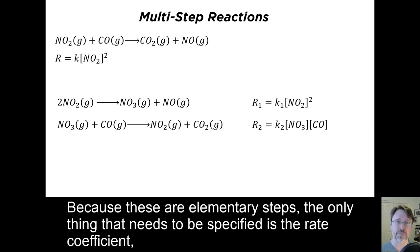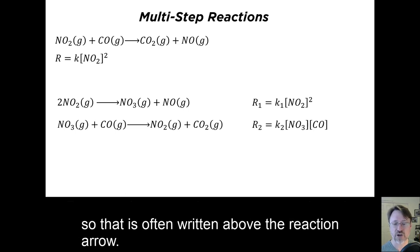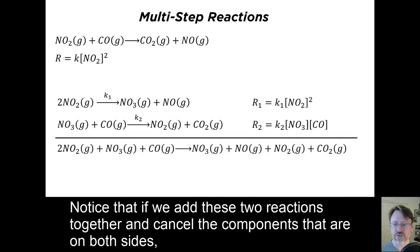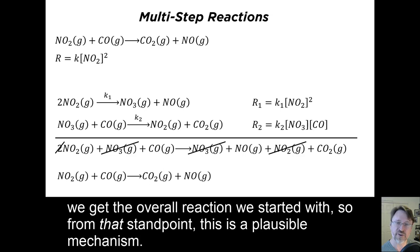Because these are elementary steps, the only thing that needs to be specified is the rate coefficient, so that is often written above the reaction arrow. Notice that if we add these two reactions together and cancel the components that are on both sides, we get the overall reaction we started with. So from that standpoint, this is a plausible mechanism.